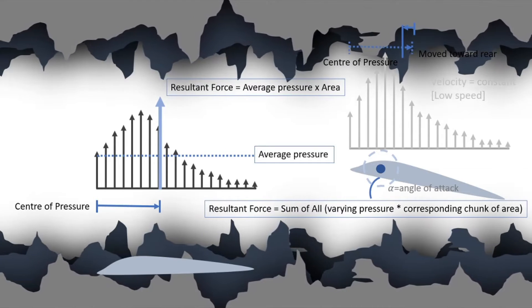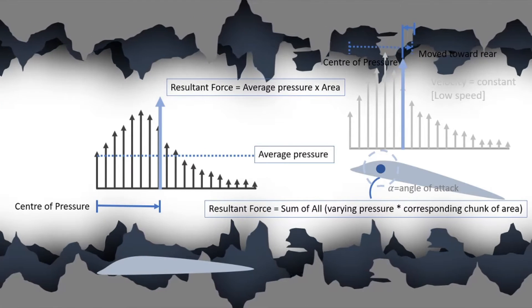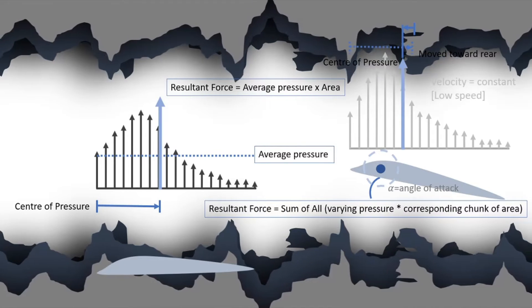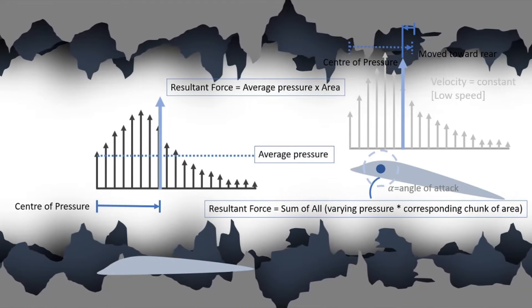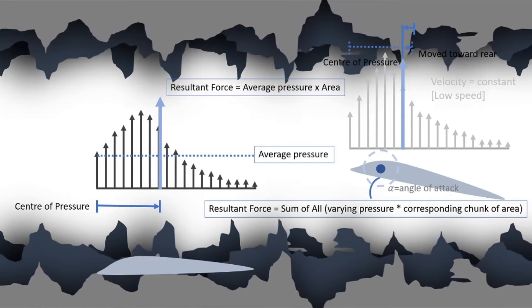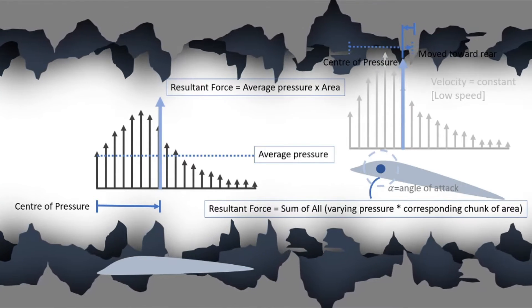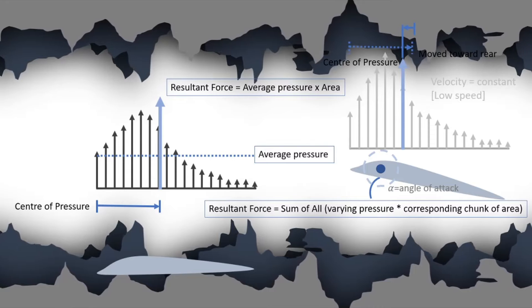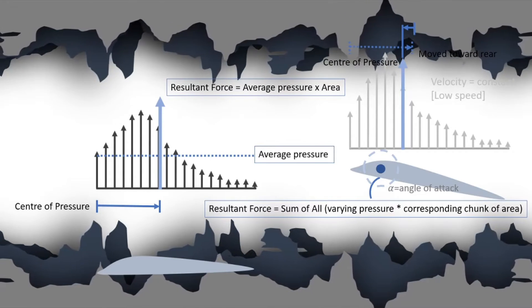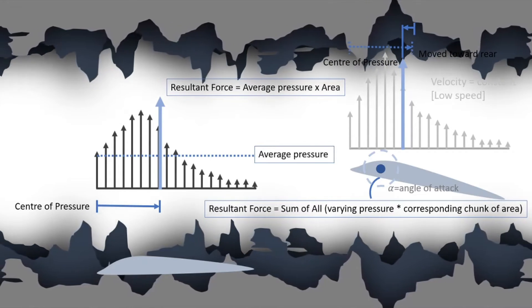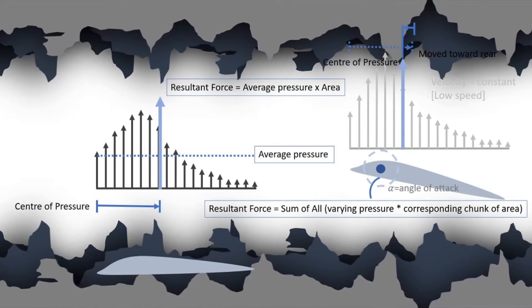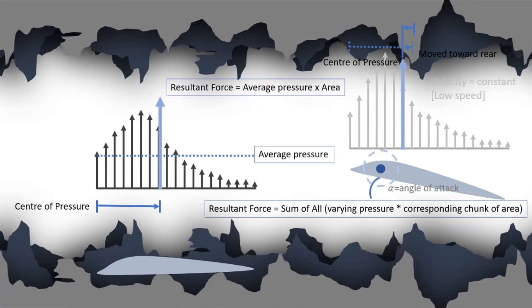As seen in the second pressure distribution diagram, the center of pressure moves rearwards as the angle of attack increases. This may not occur in all cases — the movement of the center of pressure with angle of attack is nonlinear, and the moment varies depending on the airfoil design.